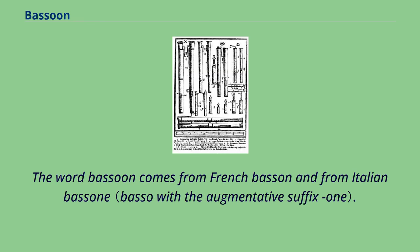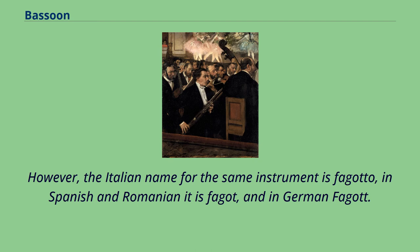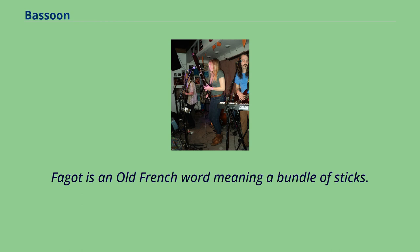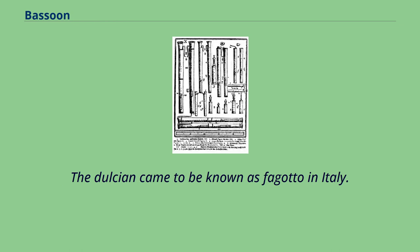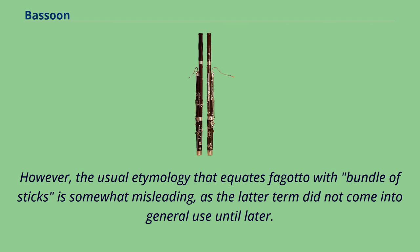The word bassoon comes from French basson and from Italian bassone. However, the Italian name for the same instrument is fagotto, in Spanish and Romanian it is fagot, and in German Fagott. Fagot is an old French word meaning a bundle of sticks. The dulcian came to be known as fagotto in Italy. However, the usual etymology that equates fagotto with bundle of sticks is somewhat misleading, as the latter term did not come into general use until later.